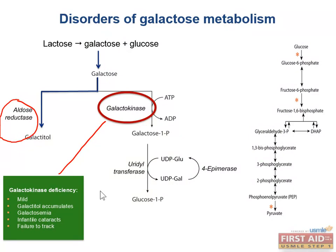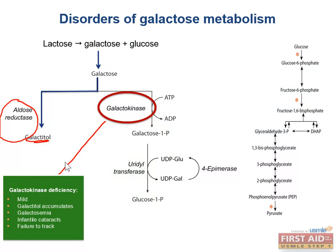Galactokinase deficiency is usually a mild condition, but galactitol does accumulate within cells and it can cause galactosemia, infantile cataracts, a failure to track objects, or a failure to develop a social smile.